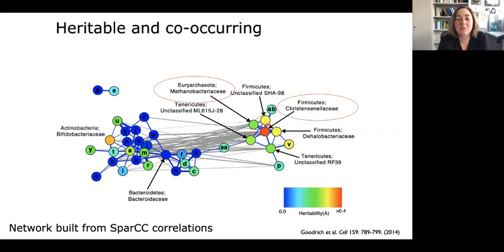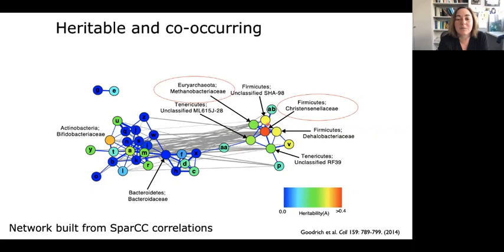Another thing we noticed was that the most heritable taxon we had — when ranked — was the family Christensenellaceae, which was very newly described in the literature at the time. It had just appeared and we'd never heard of it. It formed a co-occurrence network with a bunch of other things, including the methanobacteria — specifically archaea that make methane. This was primarily driven by Methanobrevibacter smithii. So we had a co-occurring cluster of heritable taxa.